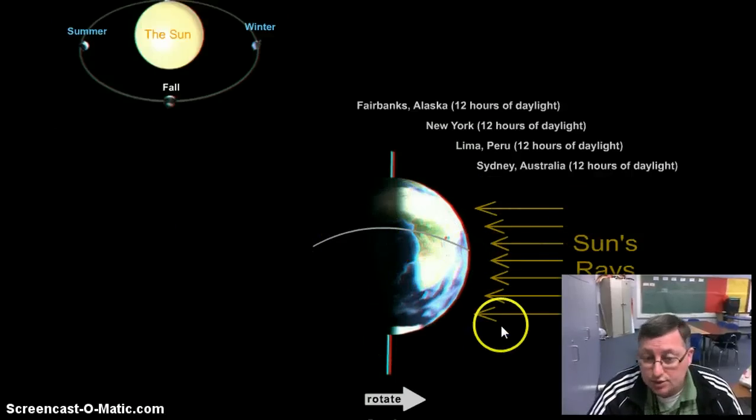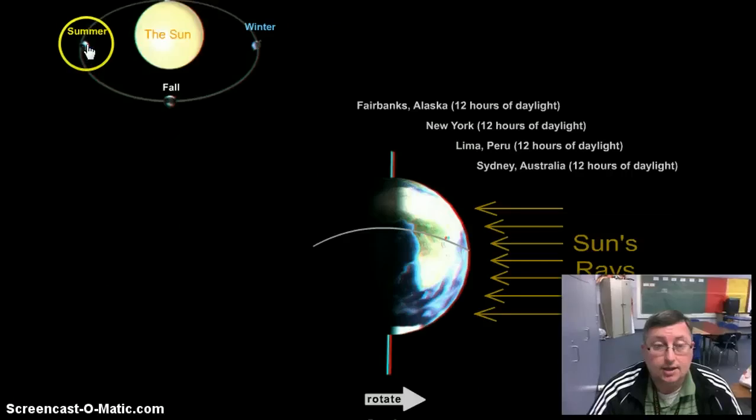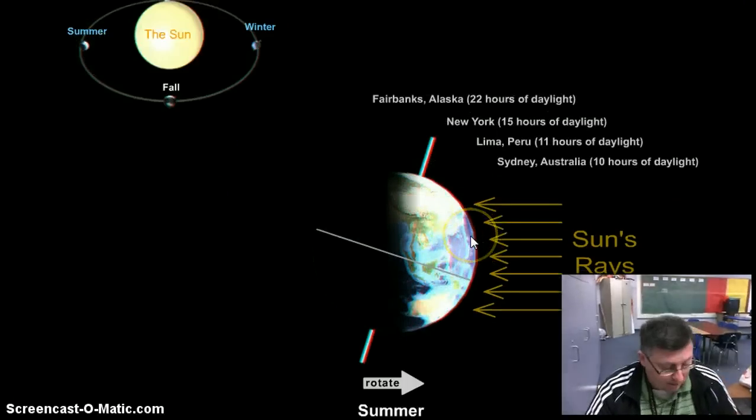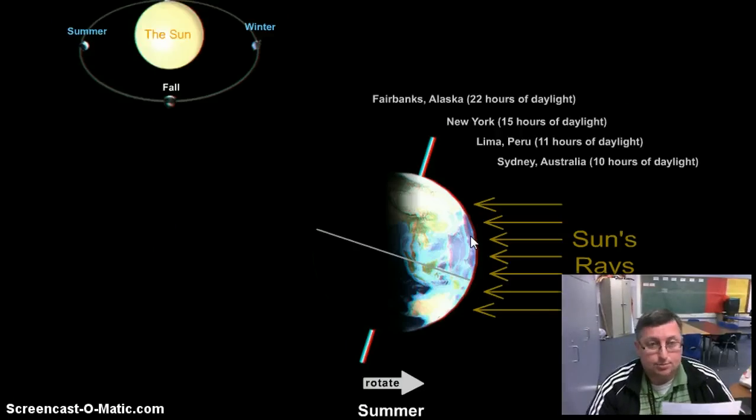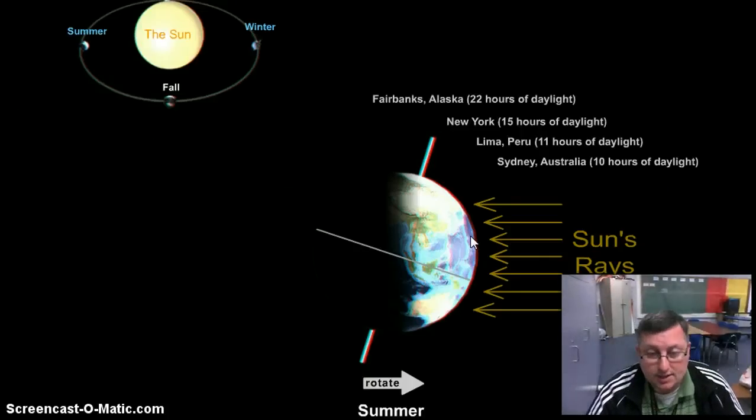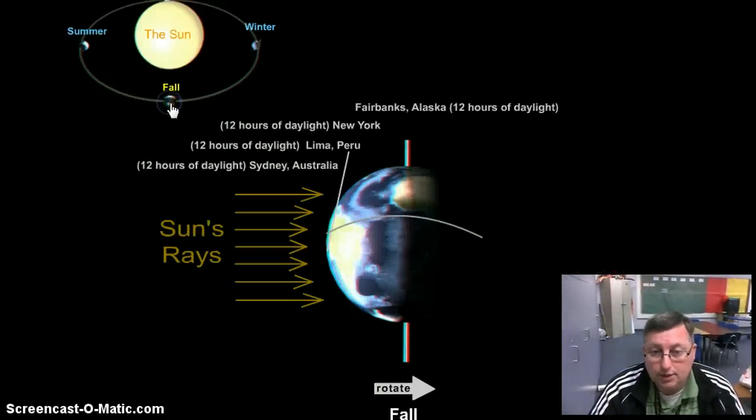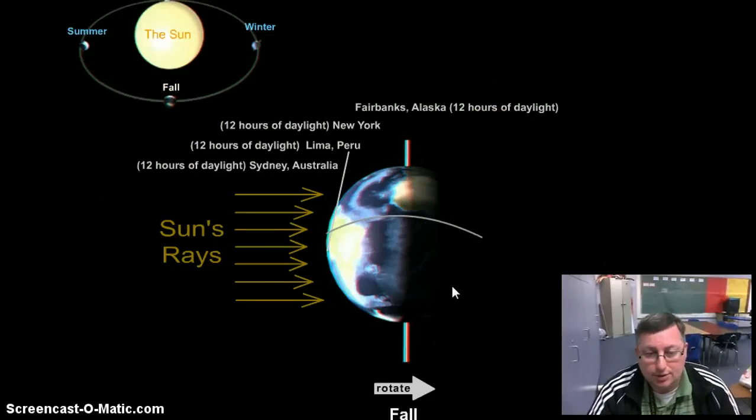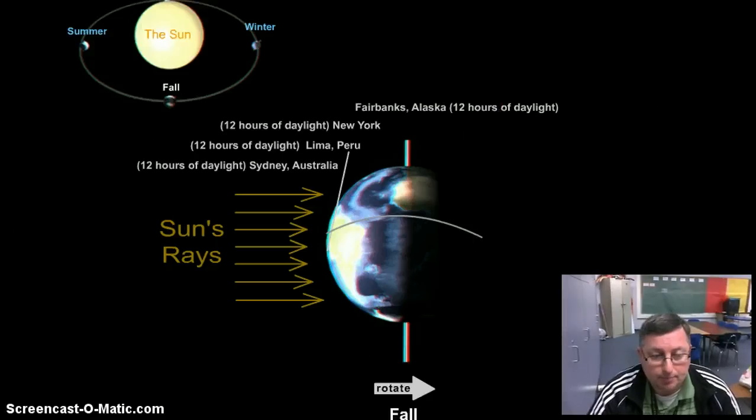And then summer would look like this, or it would be tilted towards the sun. If you need to, and you probably should, the sun should go right here in the middle so that we can see that. And then fall would look like this. You could put in the number of hours of daylight if you want. It's not, you know, you don't need to, but you could.